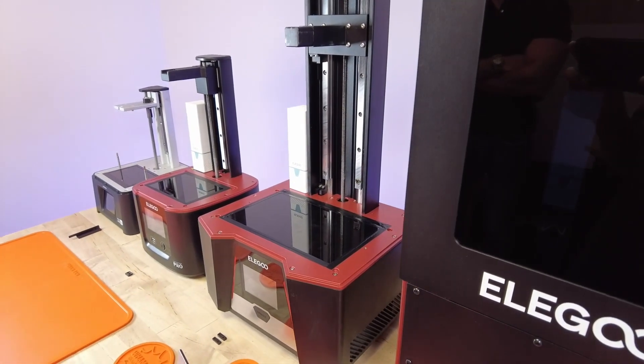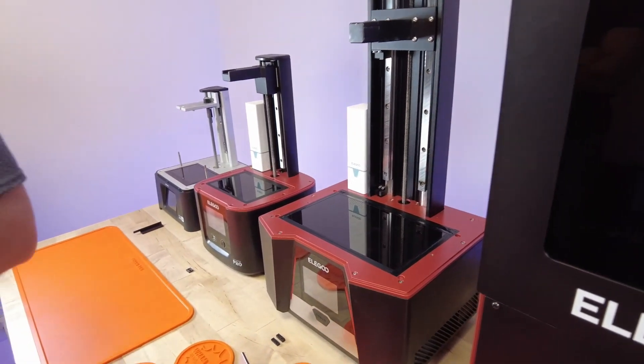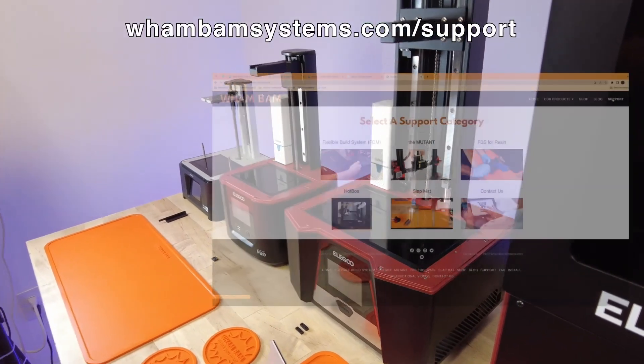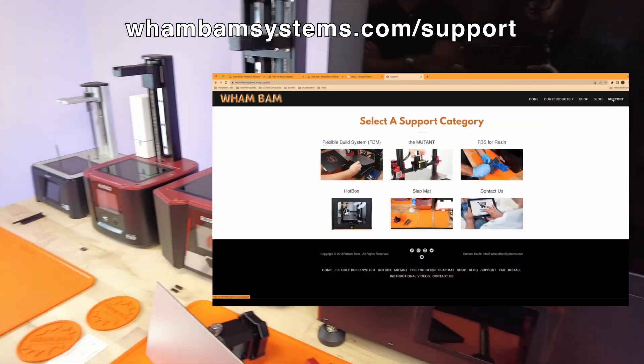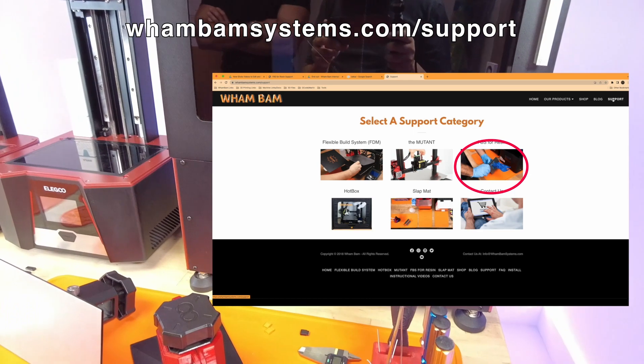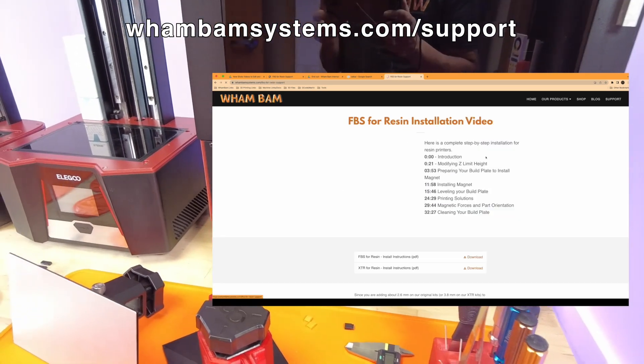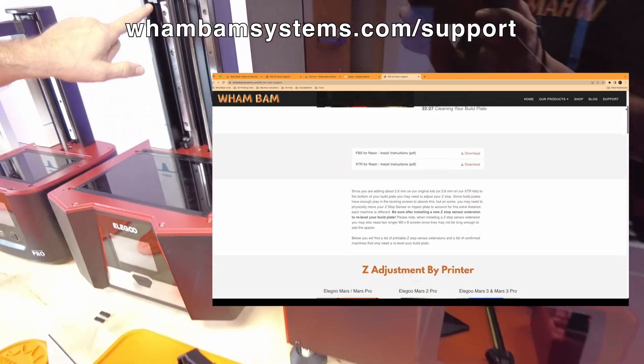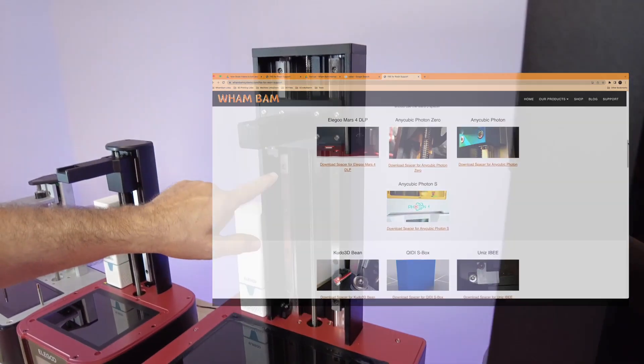So what you'll need to do is you'll need to go on to whambamsystems.com slash support to our resin page. And you'll be able to find instructions and 3D models to print your spacers or interceptor arms. And I'll show you some of the differences.